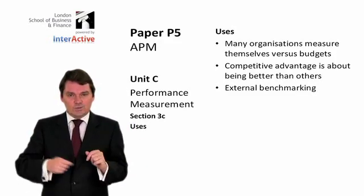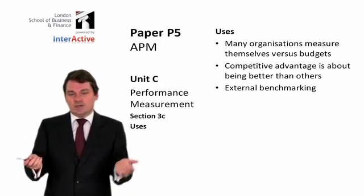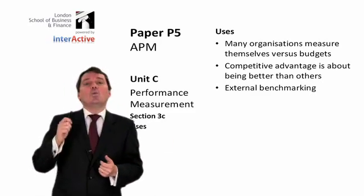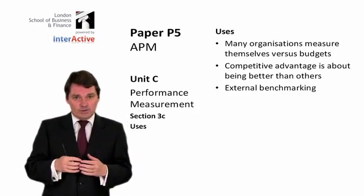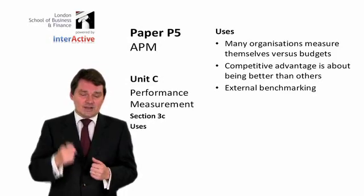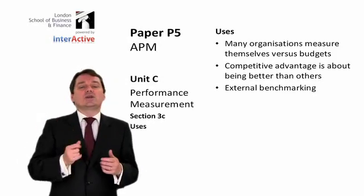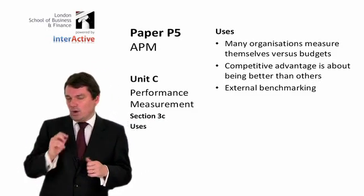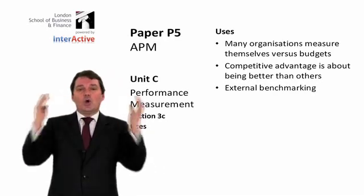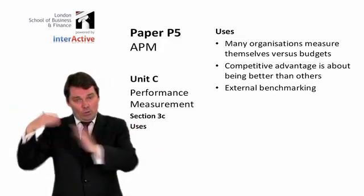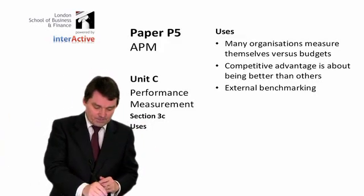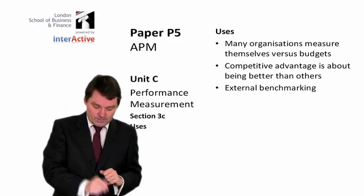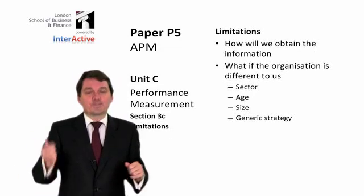So every year a company beats its budget — does that mean it's doing well? Not if it's worse than all of its rivals. It won't get any customers simply because it can beat its budget. So at some point, if we really want to be a successful company, we need to start comparing our performance with other companies. That's called external benchmarking, which comes up a lot in P5 — particularly in question one, where you are often comparing one organization with another to see how they are doing. External benchmarking is very useful, but it has some problems you need to be aware of in the exam.